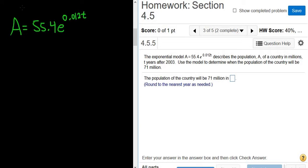So this is the population of the country T years after 2003. Use the model to determine when the population of the country will be 71 million.